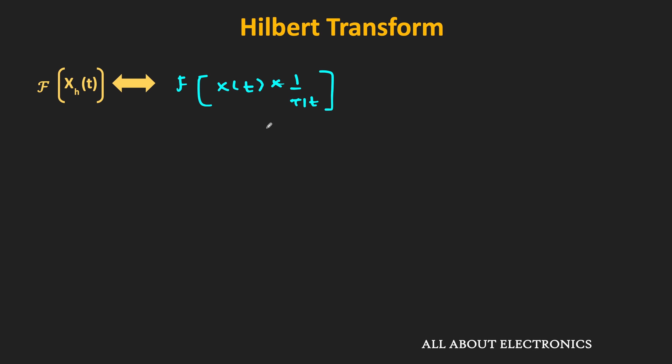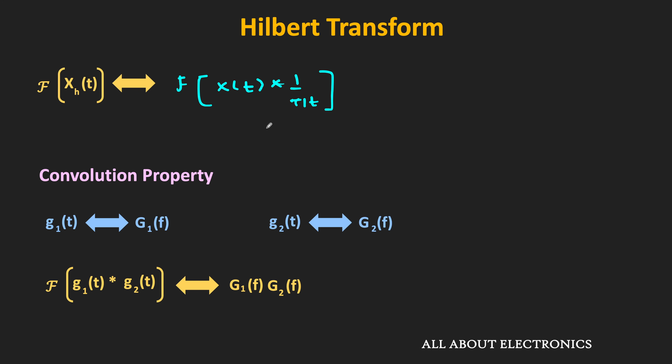We have already seen the convolution property of the Fourier transform in earlier videos. That means if G1(f) is the Fourier transform of g1(t) and G2(f) is the Fourier transform of g2(t), then the Fourier transform of the convolution g1(t)*g2(t) is the product G1(f)·G2(f).